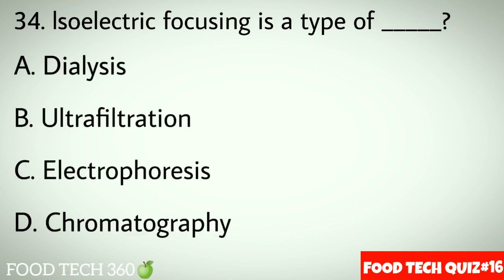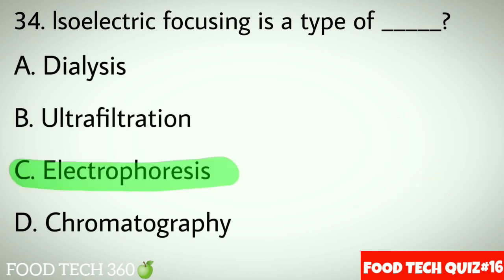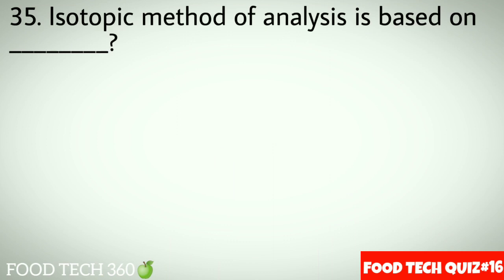Question No.34: Isoelectric focusing is a type of dash. Options A: Dialysis. B: Ultrafiltration. C: Electrophoresis. D: Chromatography. Correct answer C: Electrophoresis.